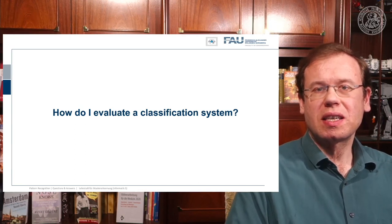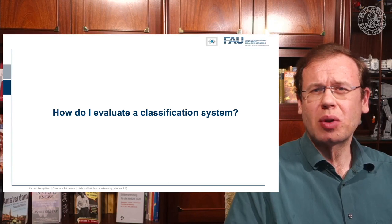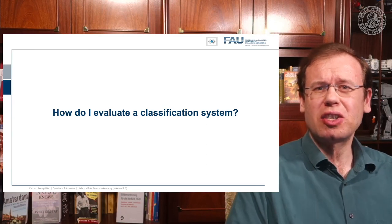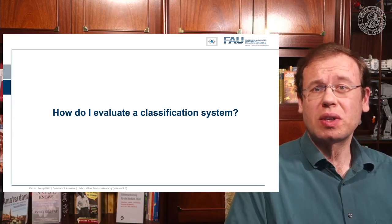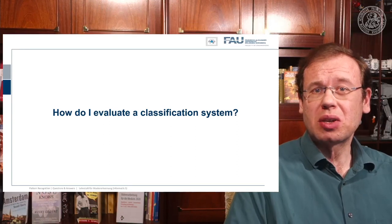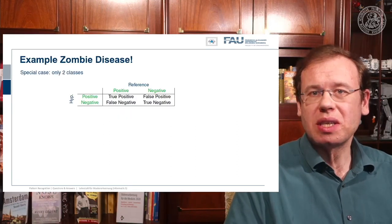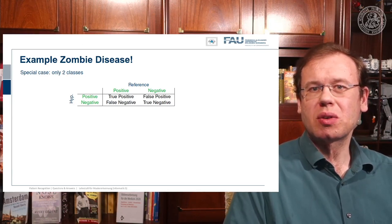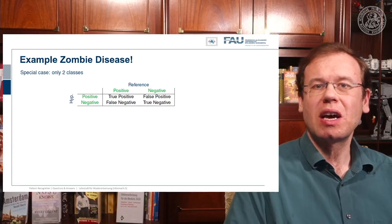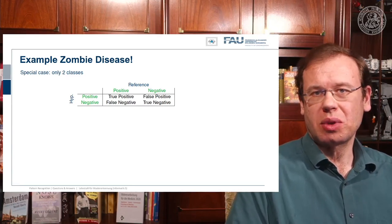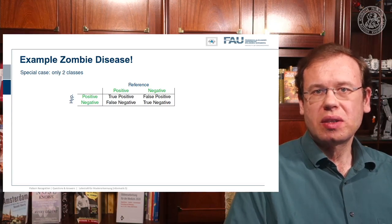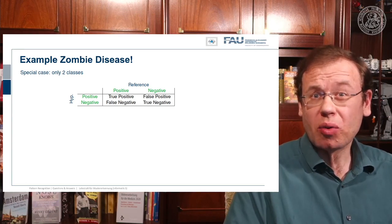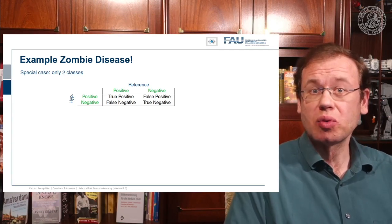Of course, we will discuss this in an example. Everybody is talking about diseases nowadays, and it seems everybody is becoming an expert on disease classification. So I thought it would be interesting to talk about a typical disease — the zombie disease. I think this is one of the most terrifying things that could happen to the world. So here is how we can evaluate the outcome of a test: we're preparing a test system to figure out who's a zombie and who isn't.